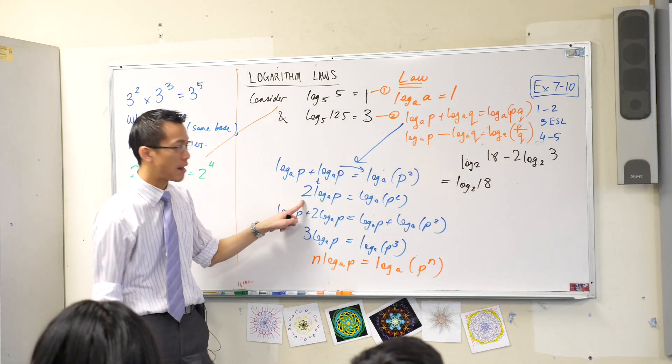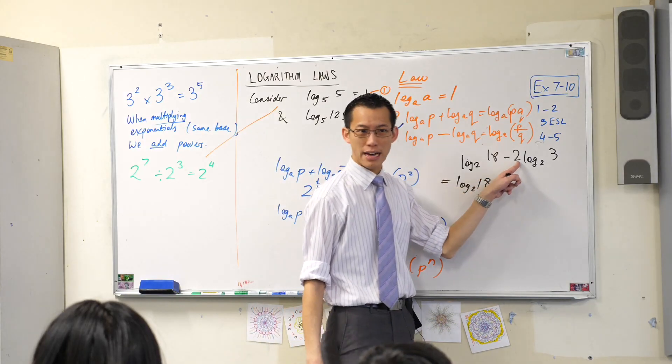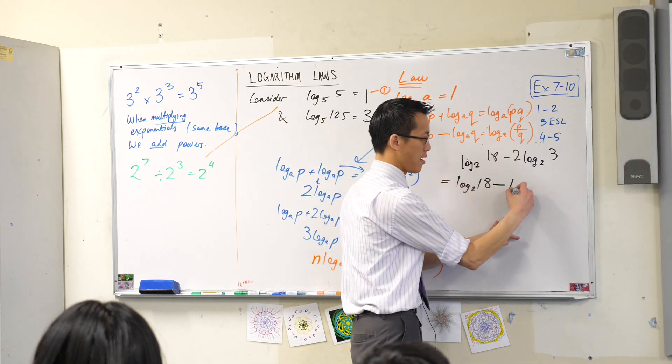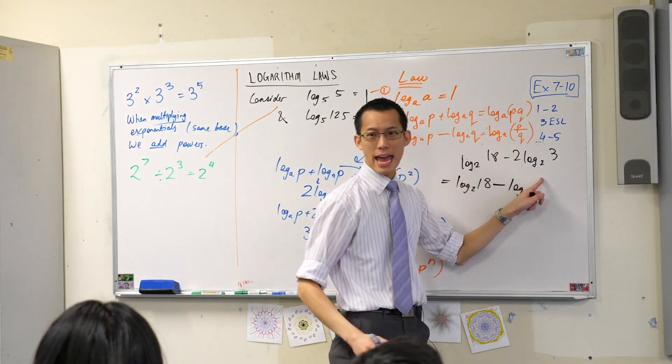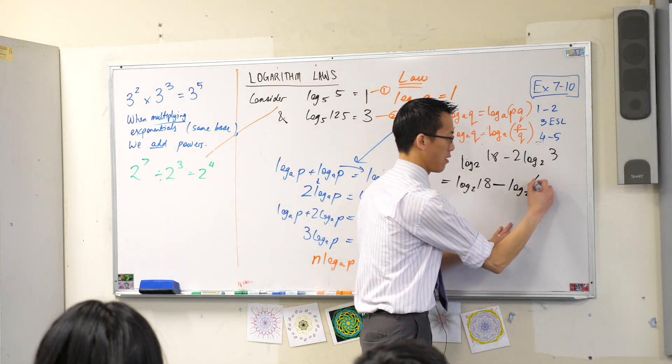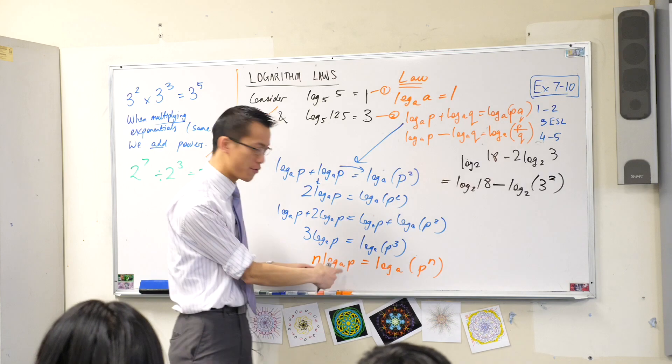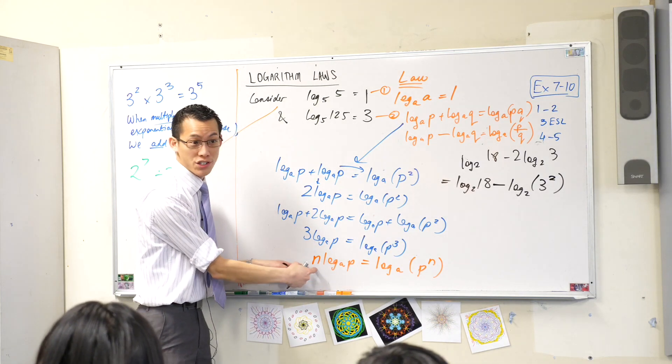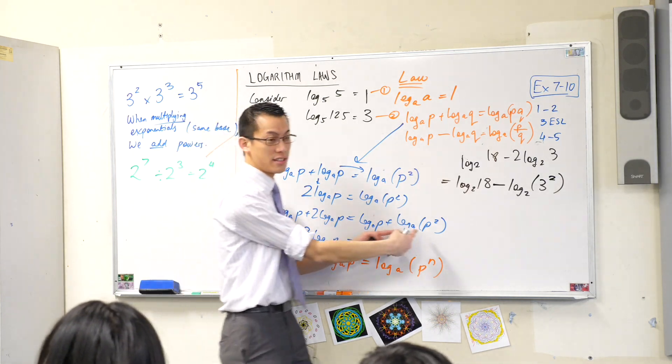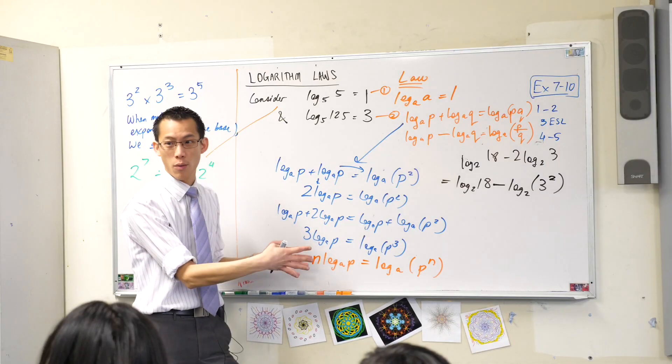In fact, it's just like this. So instead of writing the 2 at the front, I'm going to write it as a power. 3 to the power of 2. Does that make sense? You see how I've used this? This coefficient, the multiple at the front, turns into a power. Or I could do vice versa if I wanted to.